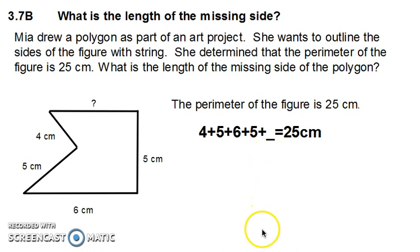We'll start by simplifying this equation. I'm going to start with 6 and 4 and 5 and 5 because I know that these facts each make 10. My equation now reads 10 plus 10 plus the unknown equals 25 centimeters.